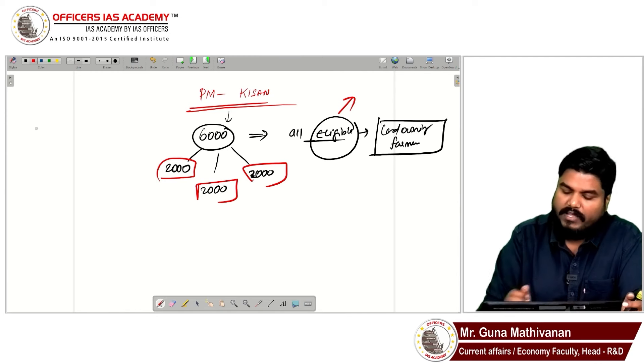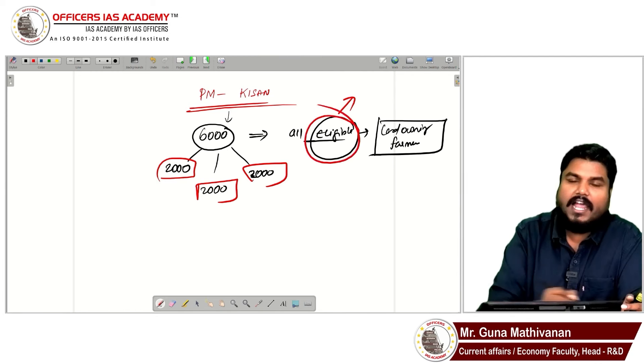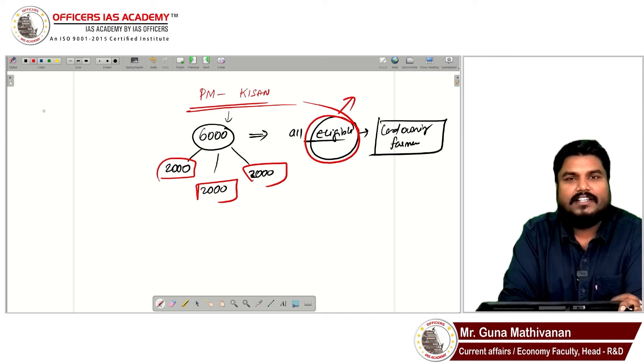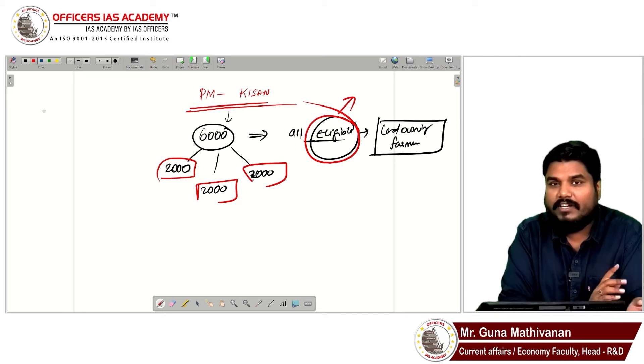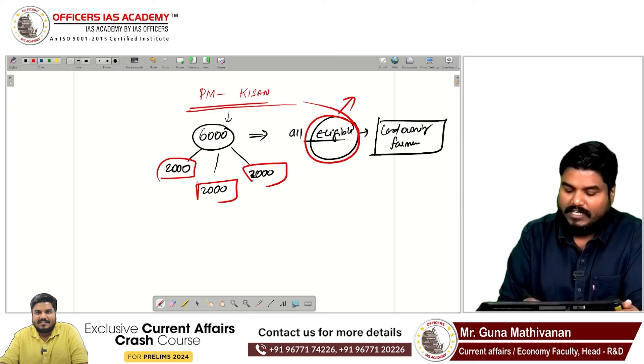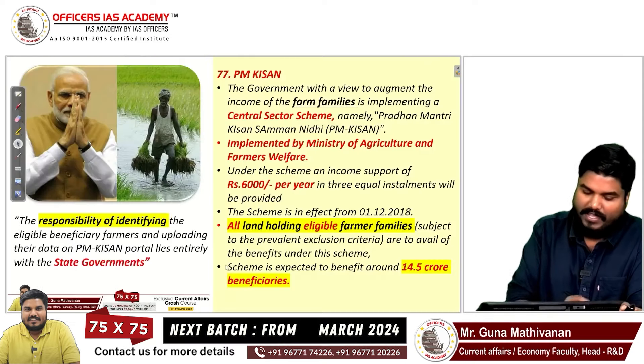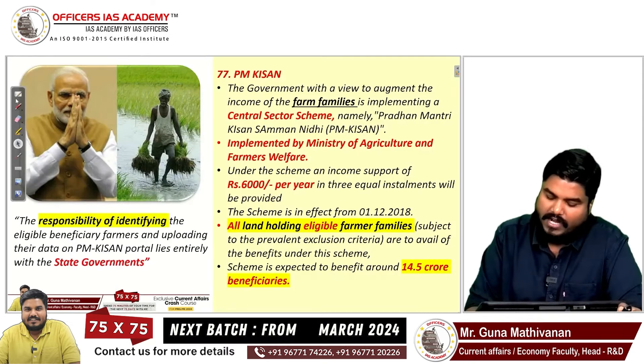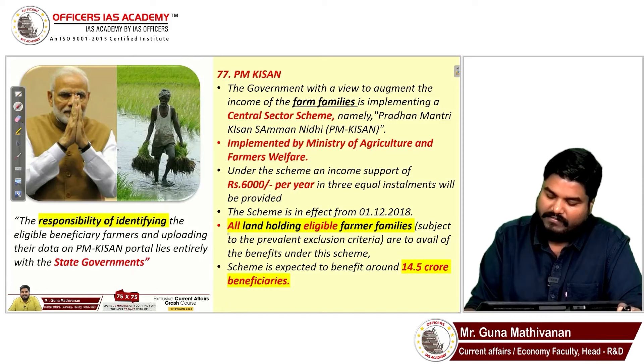It will be given only to eligible land-owning farmers. Remember, it will not be given to tenant farmers - you should own land. 6000 rupees in three installments will be given to all land-holding eligible farmer families, 6000 rupees per year.